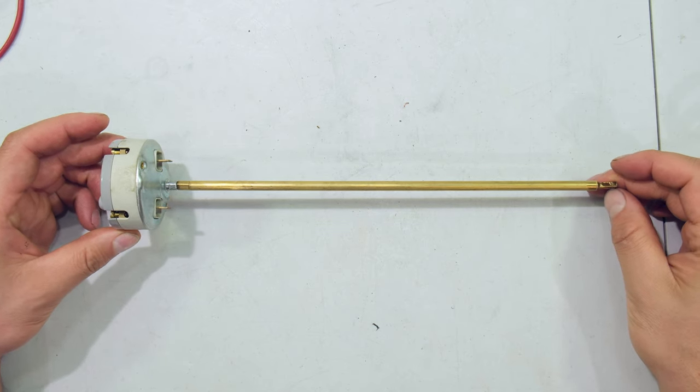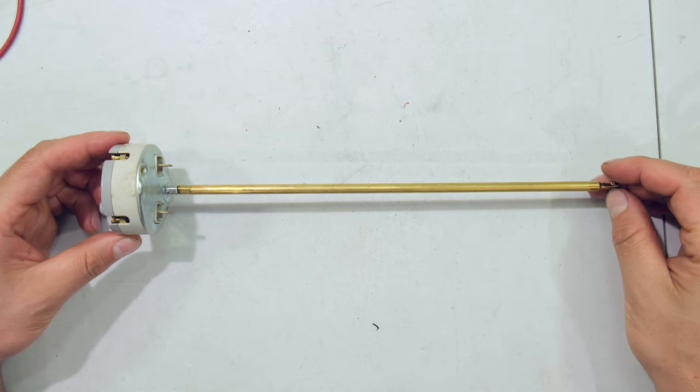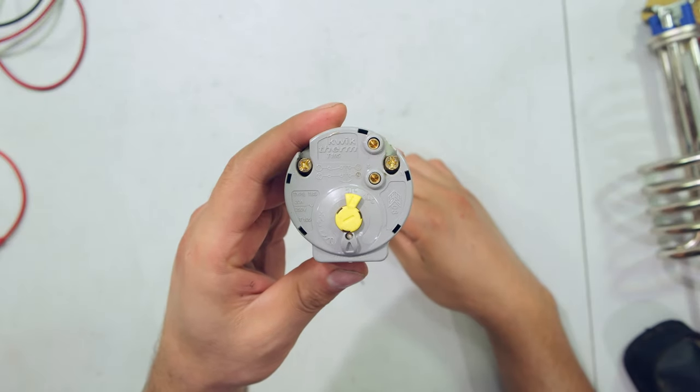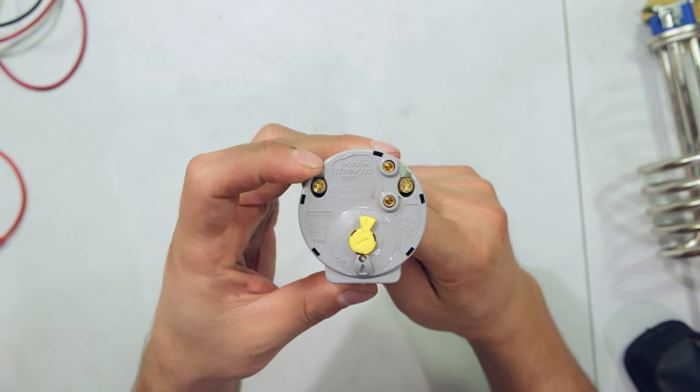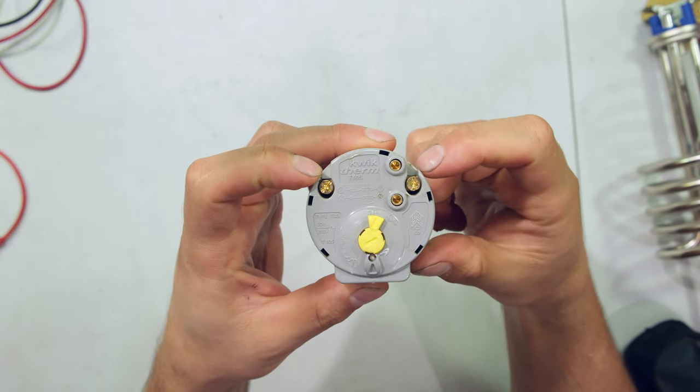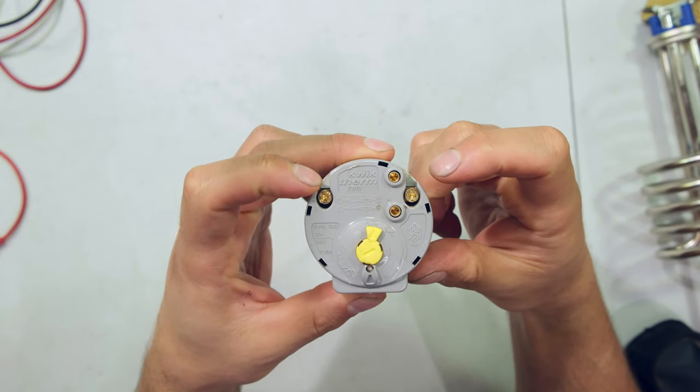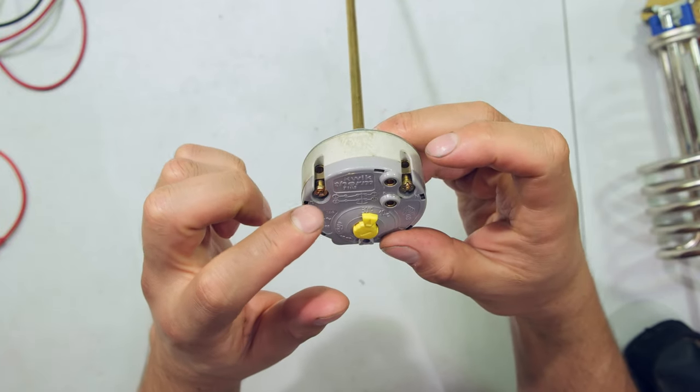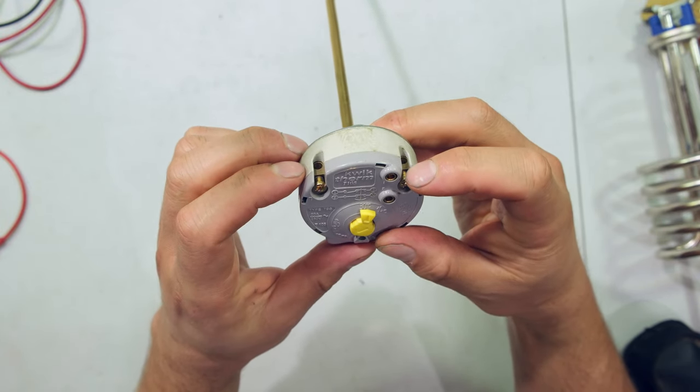Hi, in this video I'll be demonstrating how to test a boiler or geyser thermostat. Right over here I have what is called a quick therm thermostat. It has these two terminals - one is for the live wire and one is for the neutral. So you would connect your live wire there and your neutral wire there.